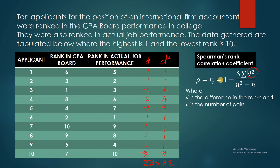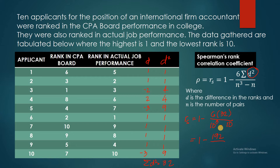We're now ready to use the formula. R sub S equals 1 minus 6 times the summation of D squared, which is 32, divided by N cubed — that's 10 cubed — minus N, which is 10. Simplifying: 1 minus 6 times 32 is 192, and the denominator 10 cubed is 1,000, minus 10 is 990. Using your calculator, you end up with a value of 0.806, taken to three decimal places.